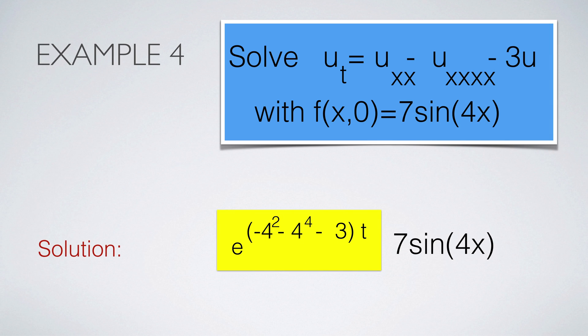In this example, the operator is d squared minus d to the power 4 minus 3 times the identity. The initial heat is already given as a Fourier series. It has only one term. We can directly write down the solution. No work was needed here except computing the eigenvalues of the operator and noticing that sine of 4x is the Fourier mode.